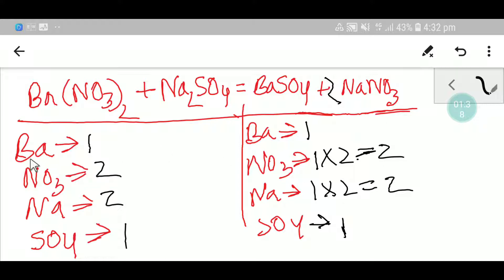So our barium one, one or nitrate two, two. Sodium two, two. Sulfate one, one. So this equation is already balanced.